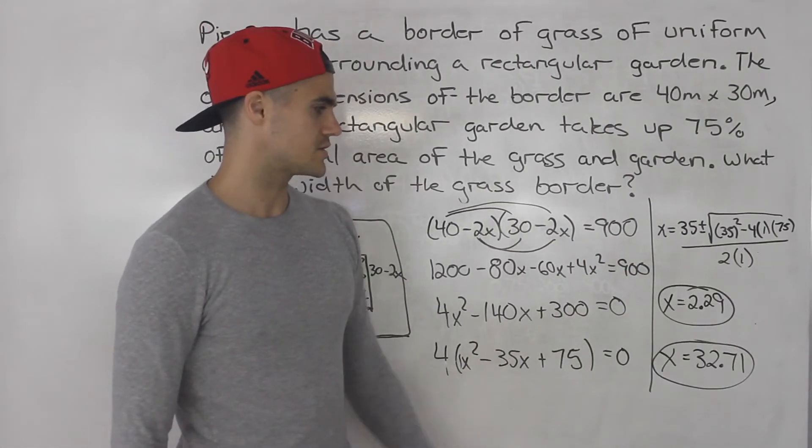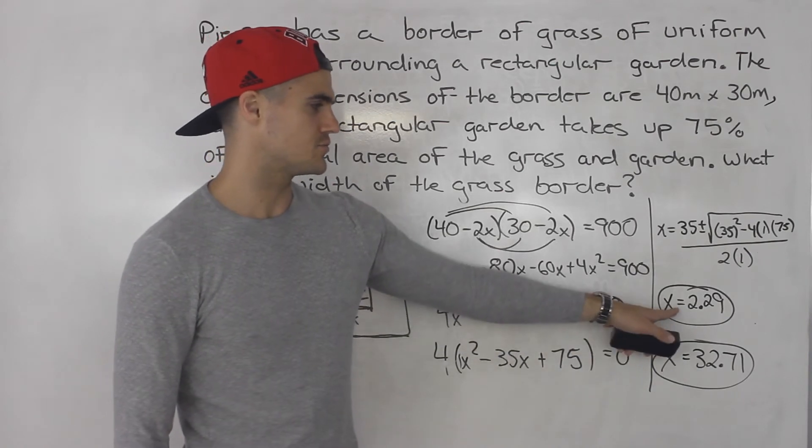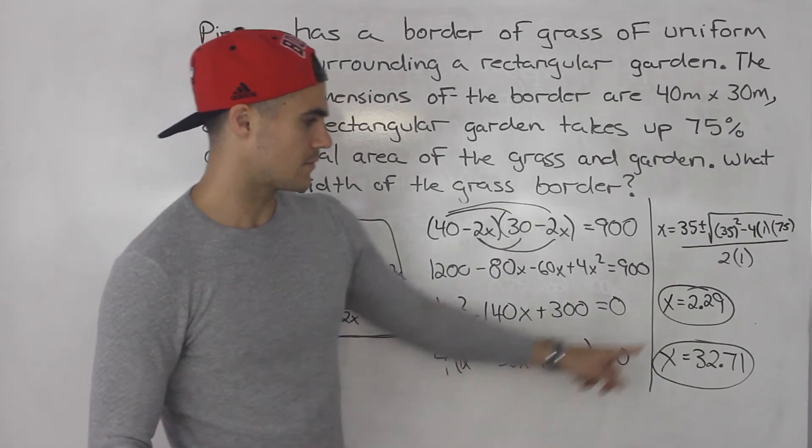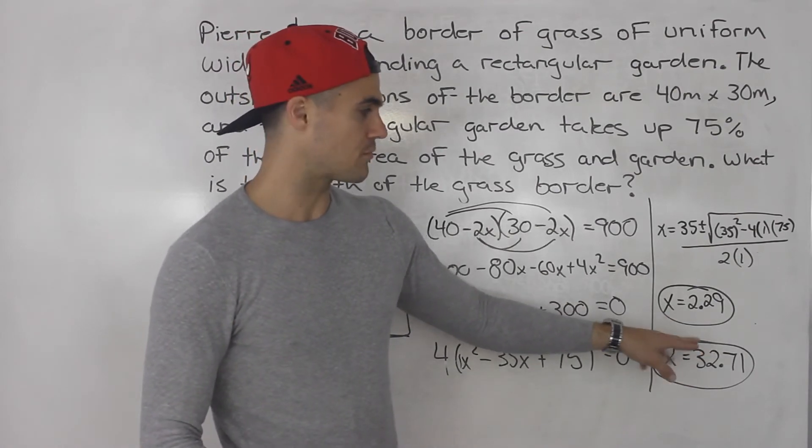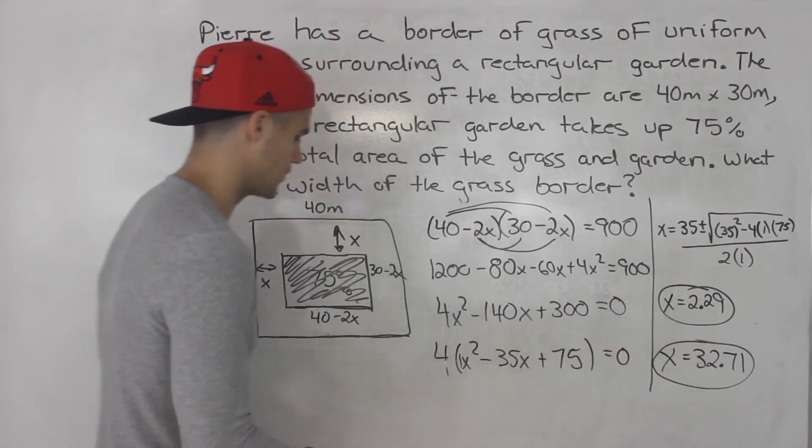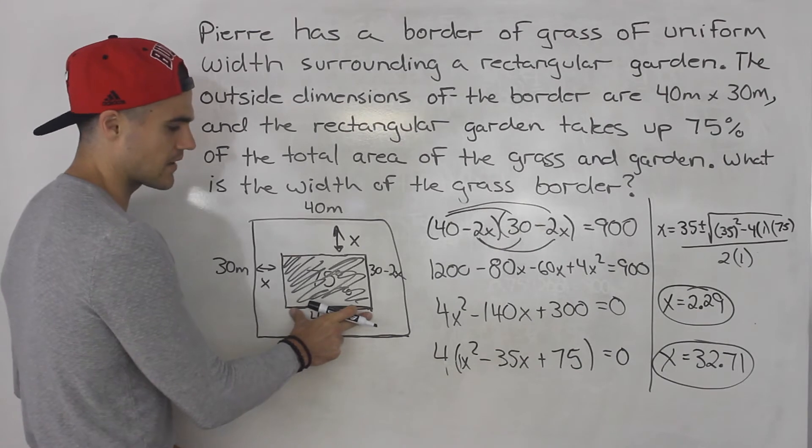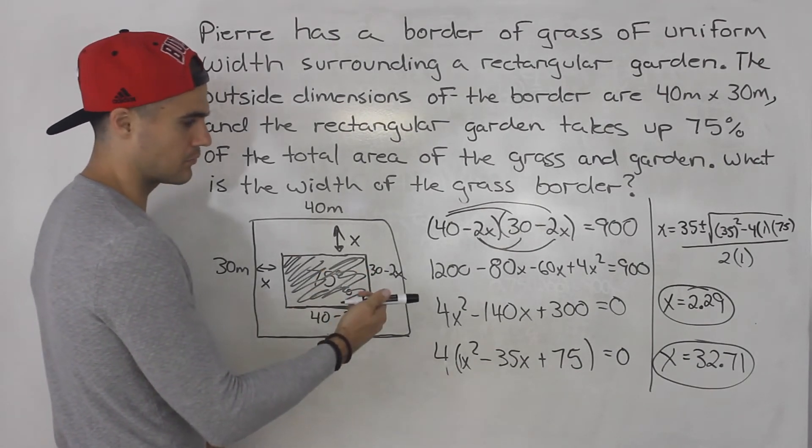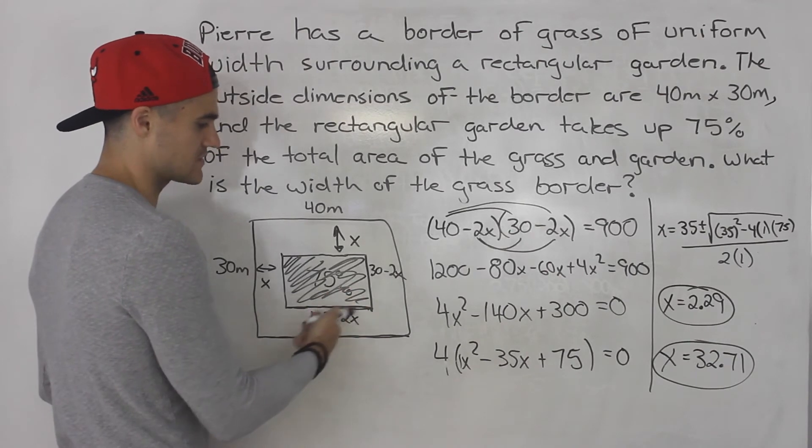So when you solve this you end up getting two x values, 2.29 and 32.71. However, they're both positive so they both may work but you do have to test them. And you have to test them with these expressions you made for the length and the width. So you have to plug both of them in and see if any of these values are going to be negative.